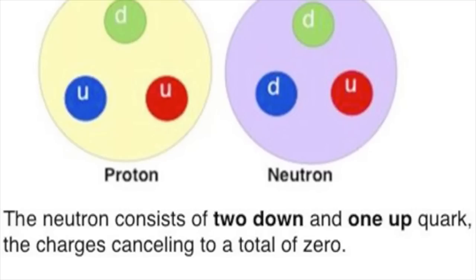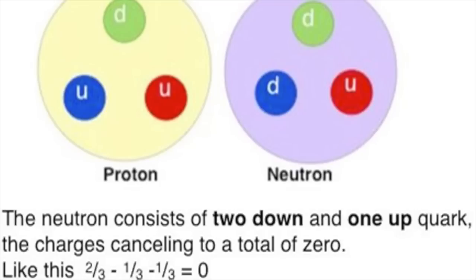A neutron is two down and one up quark and those charges cancel out to zero, that is two thirds minus a third minus a third.